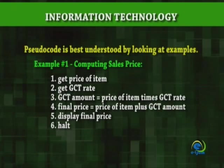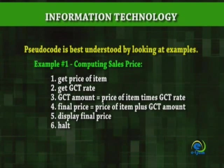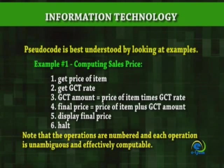1. Get price of item. 2. Get GCT rate. 3. GCT amount equal price of item times GCT rate. 4. Final price equal price of item plus GCT amount. 5. Display final price. 6. Halt. Note that the operations are numbered and each operation is unambiguous and effectively computable.